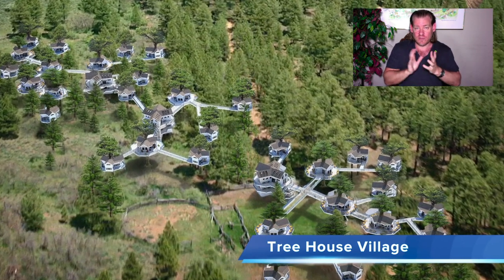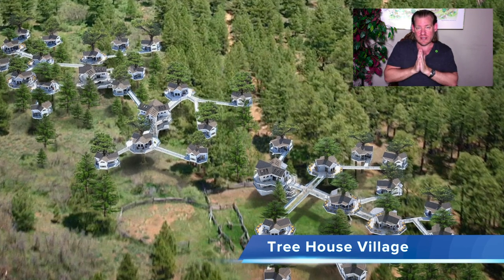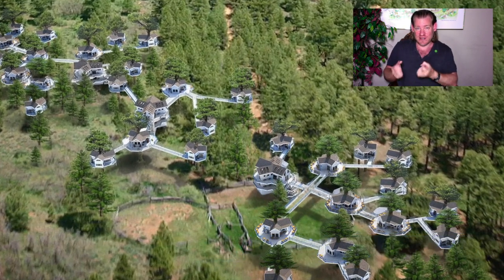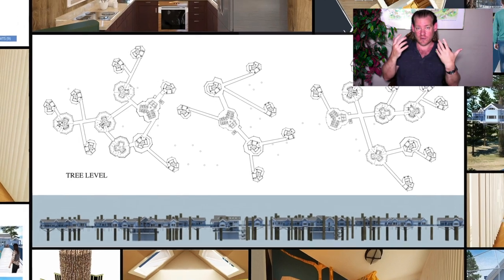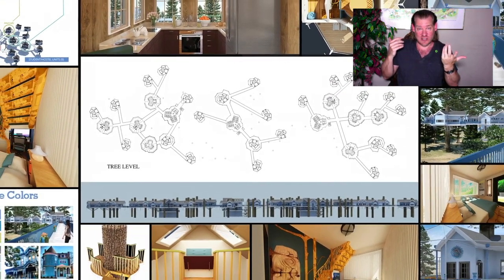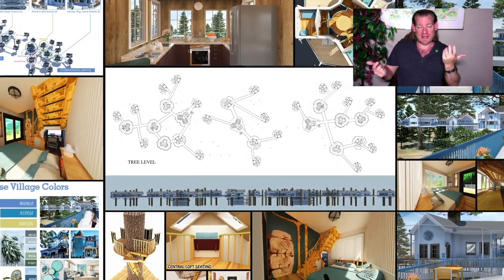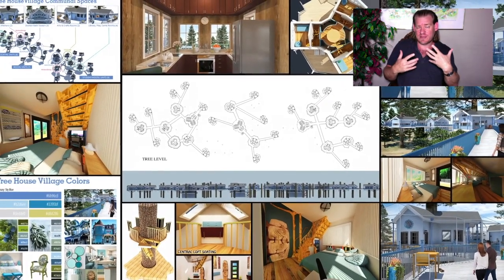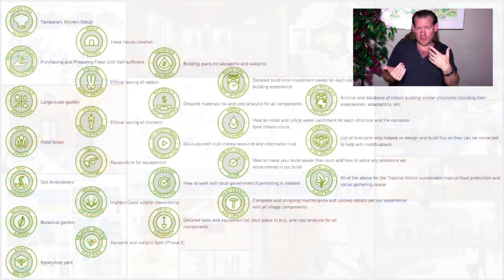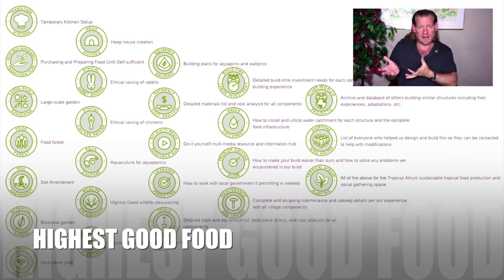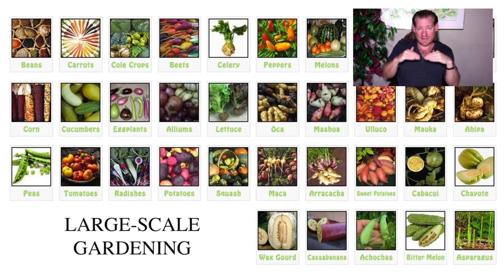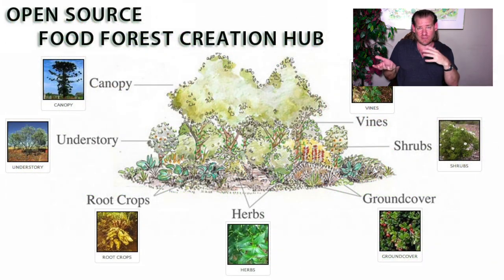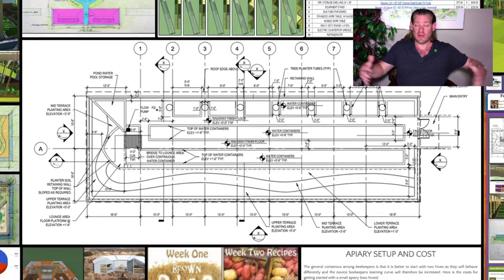Rather than just doing humanitarian aid in a country that needs it, we can create self-replicating systems that provide the resources and knowledge people need to replicate those systems — building food systems that are resilient, not using herbicides, pesticides, and fungicides, that are polycultures designed to provide higher quality, more nutritious food locally grown to support people locally rather than using fossil fuels to truck food all over the world at below living wages.